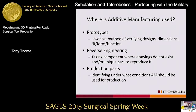So where is additive manufacturing being used today? It's being used in prototyping — you want to build something new, you don't have time to build a mold and tooling, so you go directly from CAD file to print and see whether it satisfies your requirements. In reverse engineering — one large area in medicine — taking a component where drawings do not exist, such as a part of human anatomy, and actually recreating it. And also for production parts: repetitive parts, multiple parts.